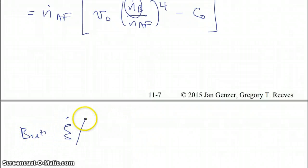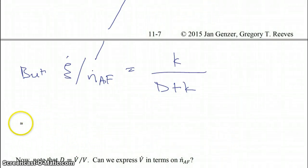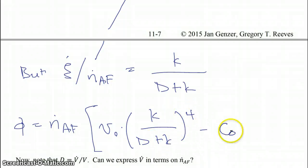But in addition to that, C dot divided by N dot A feed, which is the quantity that we have here in this parenthesis, is equal to just K over D plus K. So that's going to be important because when we simplify this further, our profit function, so that we can just get out everything as a function of N dot A feed, we then have V0 times to the fourth power K over D plus K minus C0.